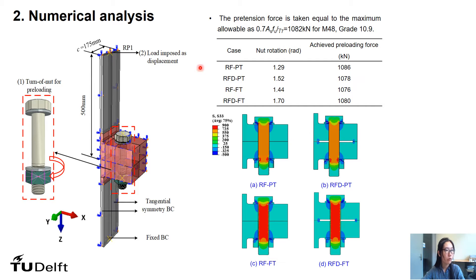In this table, RFPT means the ring flange connection with partially threaded bolt, as for the RFDFT, it means the ring flange connection with defined contacts and with fully threaded bolt. After the calibration of the rotation of the nut, a contour plot of the nominal stress in the z-direction in the bolt and flange are shown here for the final stage of pre-loading under different configuration.